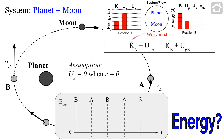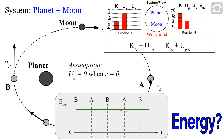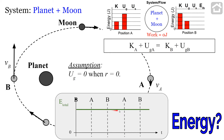The energy conservation equation is: kinetic energy at A plus gravitational potential energy at A equals kinetic energy at B plus gravitational potential energy at B. The total energy of the planet-moon system throughout the whole orbit stays constant — a flat horizontal line on an energy versus time graph. The kinetic energy varies from highest at position B to lowest at position A, cycling back and forth.